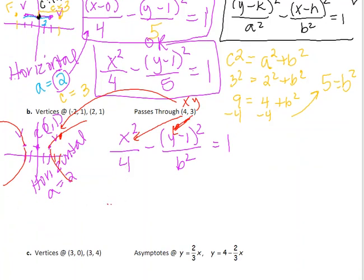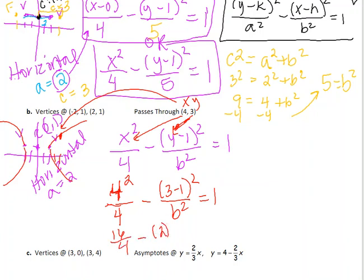I'm plugging in 4 for x. So that gives me 4 squared over 4 minus 3 minus 1 squared over b squared equals 1. If I simplify that, I get 16 over 4, which is 4, minus 2 squared over b squared equals 1. If I continue with that, 16 divided by 4 is 4.